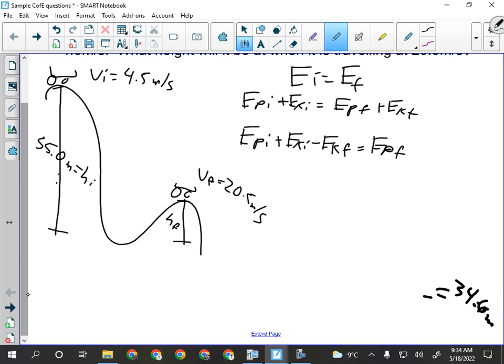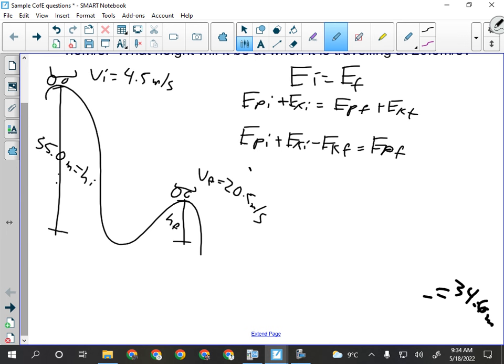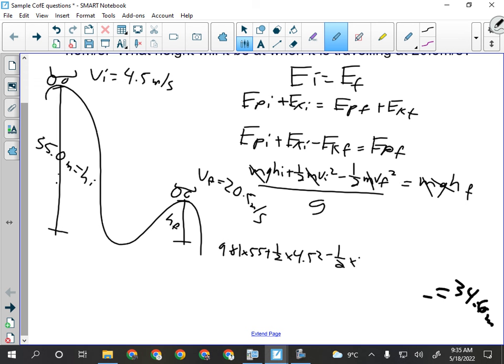So Ep initial plus Ek initial minus Ek final equals Ep final. What do I do next? Now I expand. So I'm going to go M times G times H initial plus 1 half MV initial squared minus 1 half MV final squared equals M times G times H final. Even though I was given the mass of the roller coaster, I don't need it. I'm just looking for H, so what do I have to do with G? Divide it over to the other side. So looking for HF, so we'll have 9.81 times 55 plus 1 half times 4.5 squared minus 1 half times 20.5 squared, my final kinetic divided by 9.81 should give me 34.6 meters.